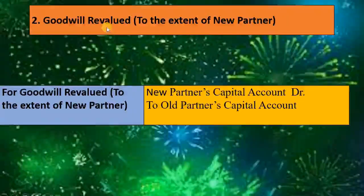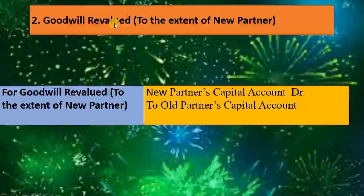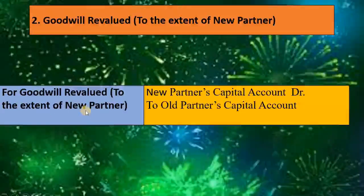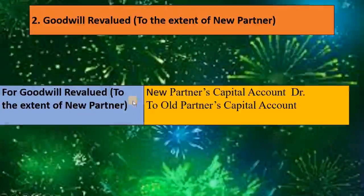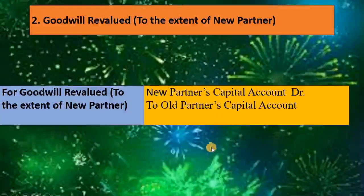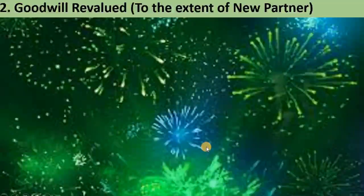The second situation is goodwill revaluation. In the case of goodwill revaluation, we have only one transaction — goodwill revalued to the extent of the new partner. In this case we have the same journal entry: new partner's capital account debit to old partner's capital account.